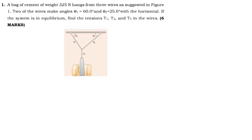In this tutorial we are going to solve some questions under Newton's laws of motion. The first question says: a bag of cement of weight 325 Newtons hangs from three wires as suggested in the figure. Two of the wires make angles of 60 degrees and 25 degrees with the horizontal. If the system is in equilibrium, find the tensions T1, T2, and T3 in the wires.